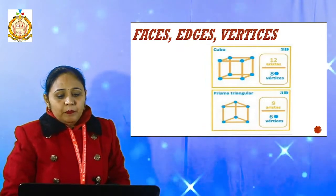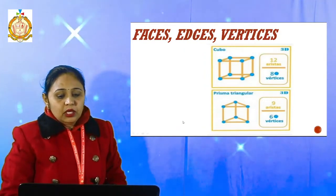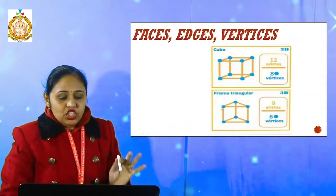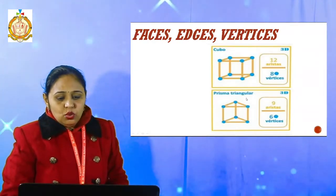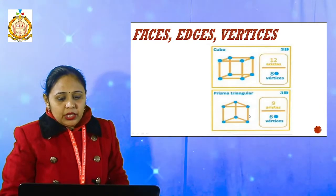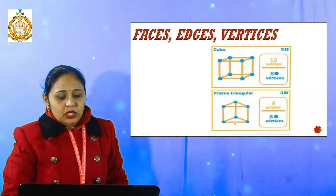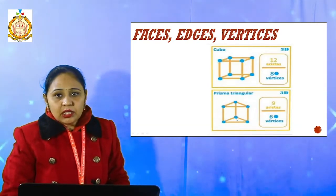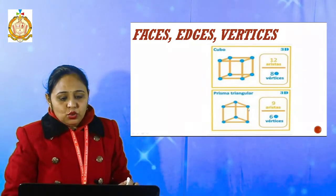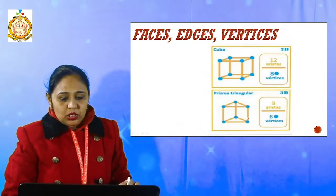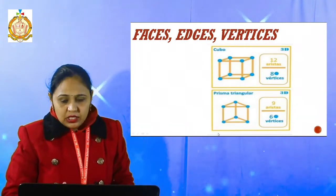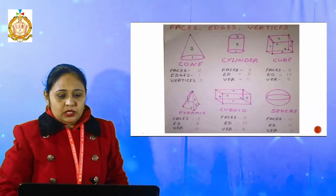In the same way, if there is a triangular prism — how many lines are there? Just count the edges: one, two, three, four, five, then six, seven, eight, and nine. How many edges? Nine. Now see the corners: one, two, three, four, five, six. How many corners? Six — that means there are six vertices.